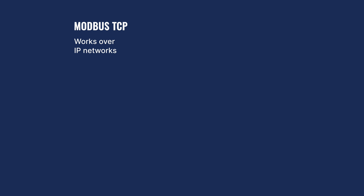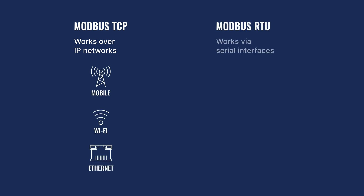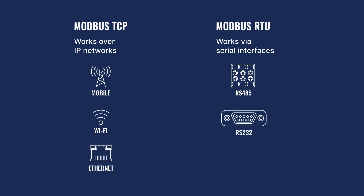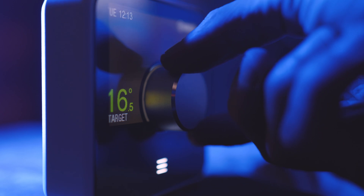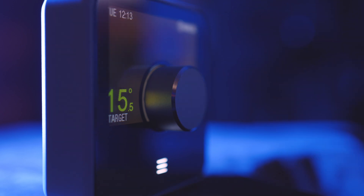Modbus TCP/IP facilitates communication over IP networks, while Modbus RTU enables industrial devices to exchange data using physical serial RTU interfaces such as RS-485 or RS-232. The variation you choose depends on what interface or communication your end device supports. The Modbus protocol is most commonly used in automation systems and is particularly popular in applications where end devices like sensors transmit data readings or control commands to specific targets.